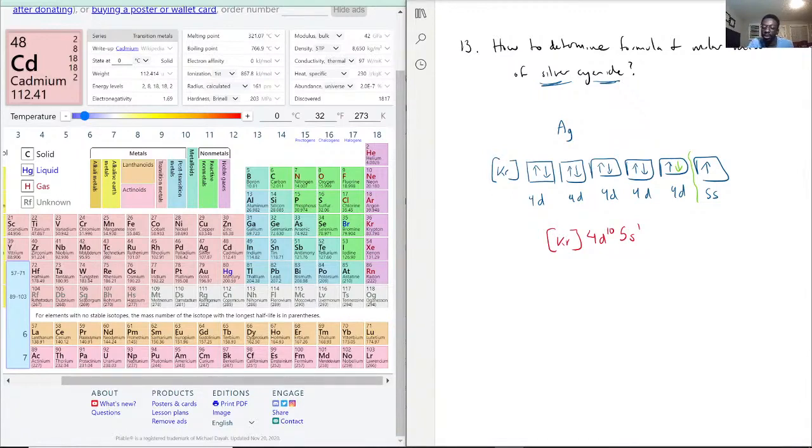So its preferred electron to give away would be this 5s1 right here, only one electron. So silver typically as an ion would be Ag+, just one.